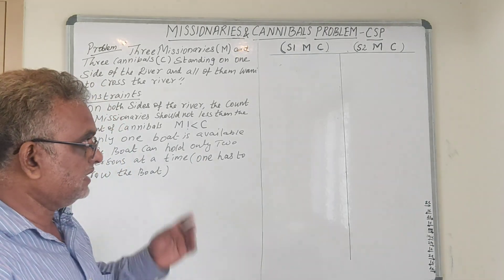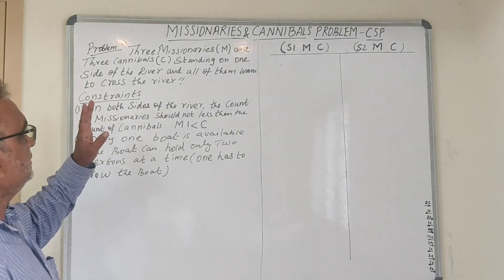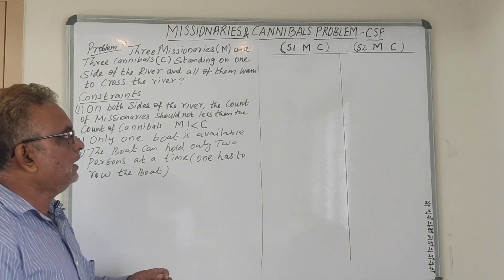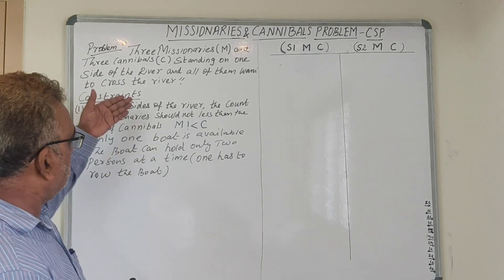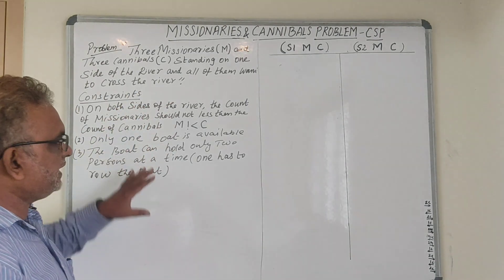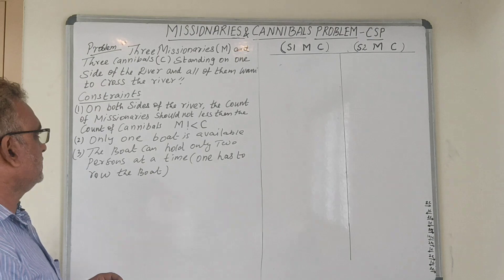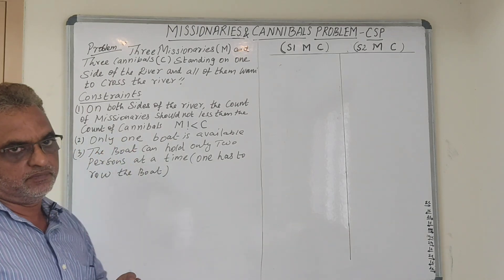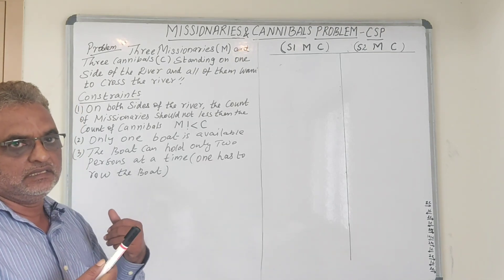It is a type of constraint satisfaction problem. The problem can be stated as: there are three missionaries and three cannibals standing on one side of the river, and all of them want to cross the river. The first constraint is that on both sides of the river, the count of missionaries should not be less than the count of cannibals. If the cannibals count increases, the cannibals may eat the missionaries.